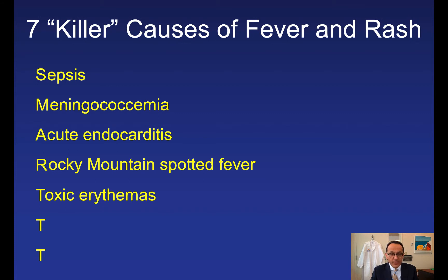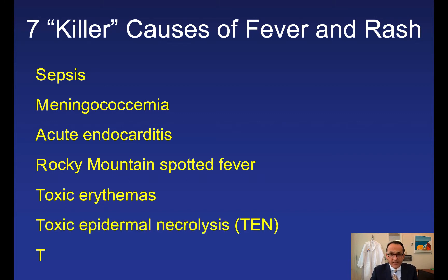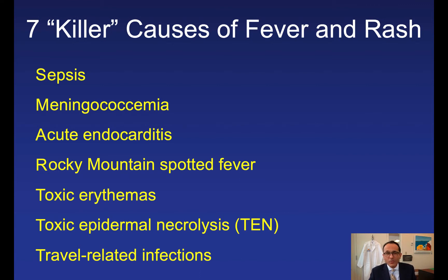Next are the toxic erythemas — toxic shock syndrome due to staph or strep, and toxic epidermal necrolysis (TEN), usually due to drugs. It's a SNAP to remember the drugs that lead to TEN: sulfonamides, NSAIDs, allopurinol, and phenytoin. Finally, travel-related infections — usually in people who have returned from the developing world with viral hemorrhagic infections due to Ebola or Hantavirus. When I suspect a killer cause of fever and rash, I have a low threshold to consult infectious disease and dermatology.